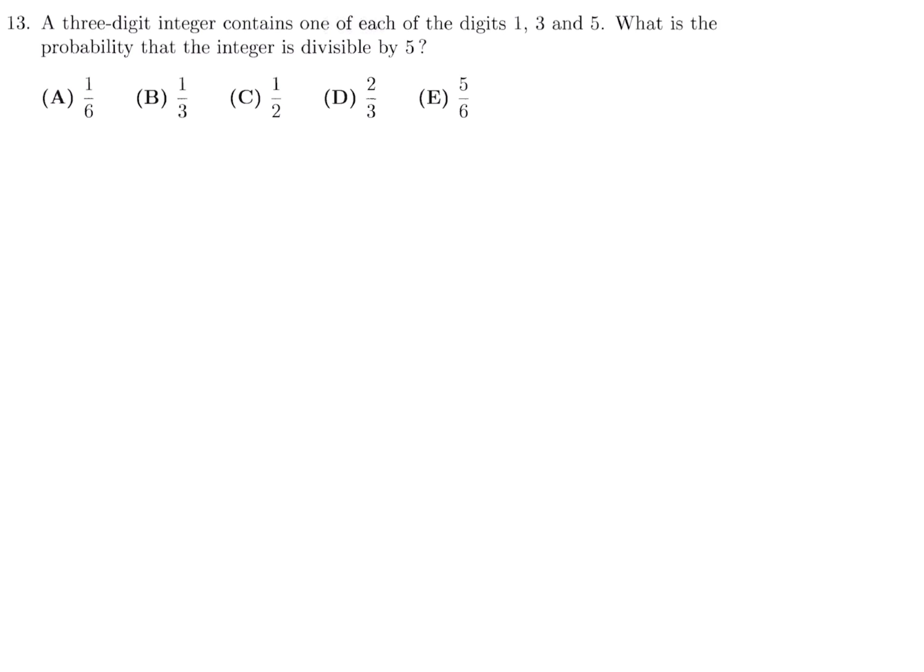A three-digit integer contains one of each of the digits 1, 3, and 5. What is the probability that the integer is divisible by 5? All right, so again, we can figure out all the possible combinations pretty quickly. 1, 3, 5, 1, 5, 3. Or you can have 3, 1, 5, 3, 5, 1. Or you can have 5, 1, 3, 5, 3, 1.